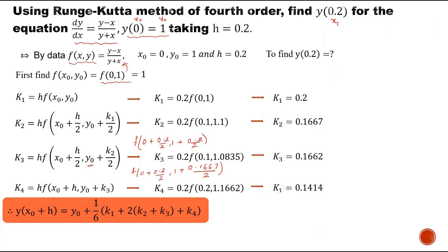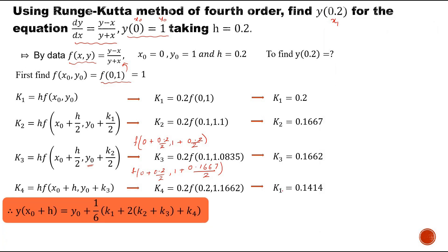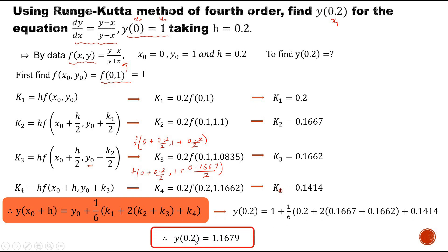After finding all these values, I apply the Runge-Kutta method of fourth order general formula: y(x₀ + h) = y₀ + (1/6)(k1 + 2k2 + k3 + k4). Substituting all four values along with y₀, the final answer is y(0.2) = 1.1679.